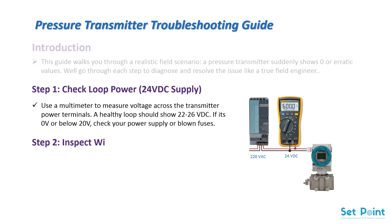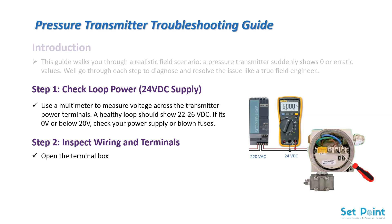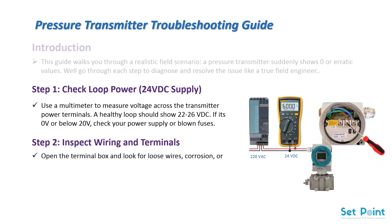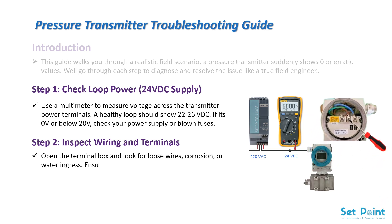Step 2: Inspect wiring and terminals. Open the terminal box and look for loose wires, corrosion, or water ingress. Ensure terminal screws are tight. Reterminate if necessary and ensure polarity is correct.